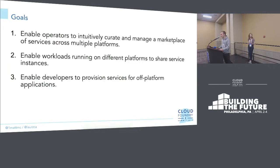There are three goals of ISM. The first is to solve the many marketplaces problem — enabling operators to intuitively curate a marketplace that spans multiple platforms. The second goal is enabling workloads on different platforms to share service instances. About a year ago, the Cloud Foundry services API team introduced the ability to share service instances across orgs and spaces. Now we understand that apps don't always live in one platform or one foundation — they may even span different platforms like CF and Kubernetes. Enabling those workloads, no matter where they're running, to share the same backing service is pretty important.